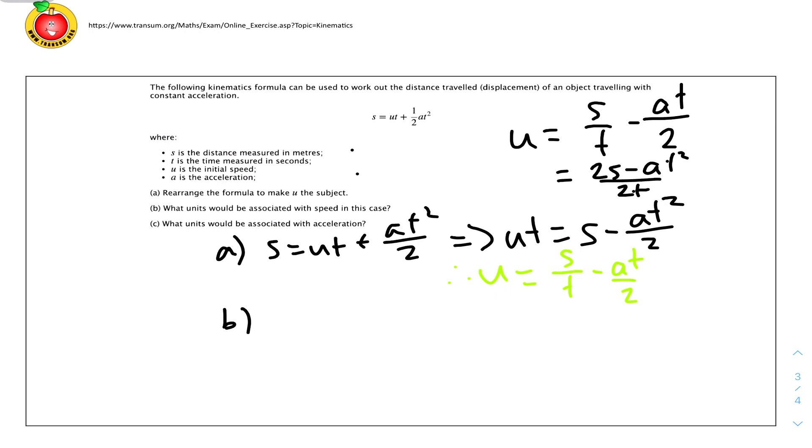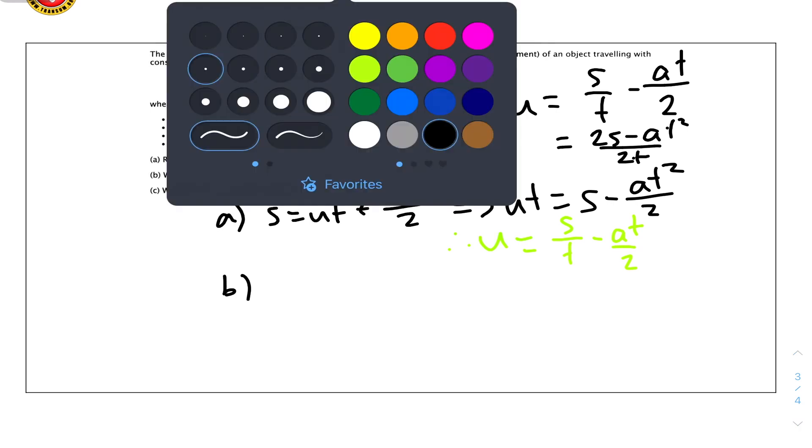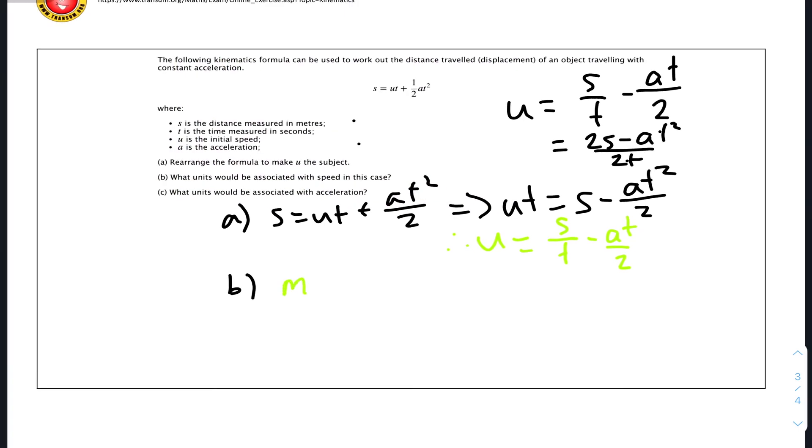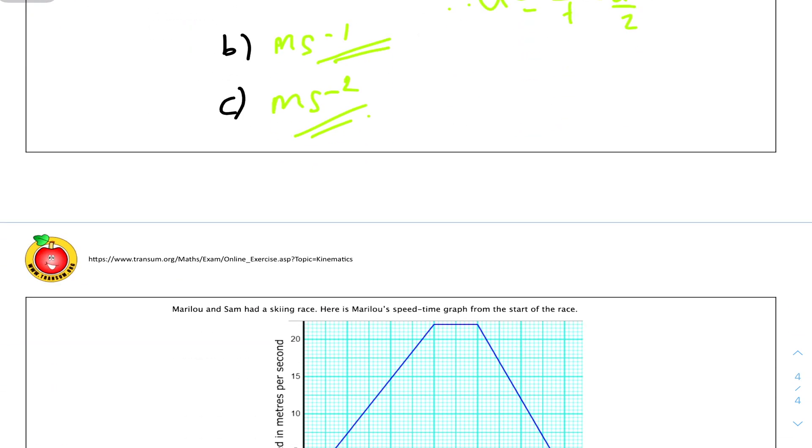Part b: what units will be associated with speed in this case? Because we know initial speed, and speed is measured in meters per second, therefore the units will be in meters per second. And the units for acceleration will be almost the same as speed, but there will be 1 over s. Therefore it will be meters per second squared.